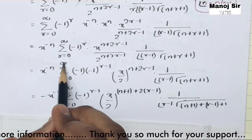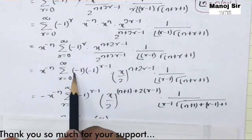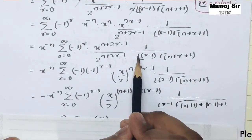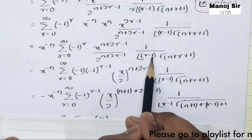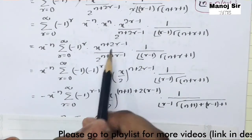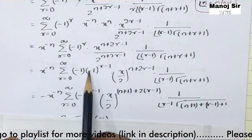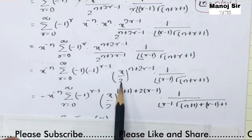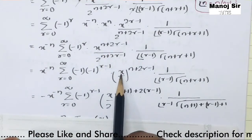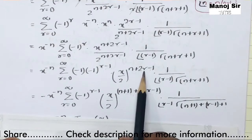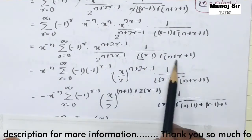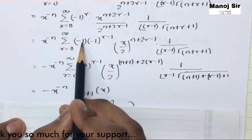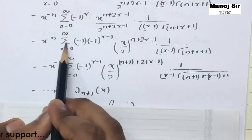We rewrite (-1)^r as (-1) times (-1)^{r-1}, because we have (r-1)! and need the index to match r-1. The factor (x/2)^{n+2r-1} can be written as (x/2)^{n+2r-1} with the same exponent, which we rewrite as (x/2)^{(n+1)+2(r-1)} to match the J_{n+1} form.